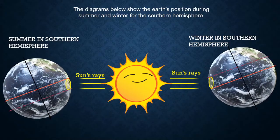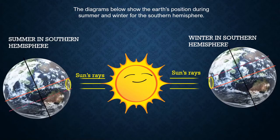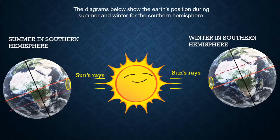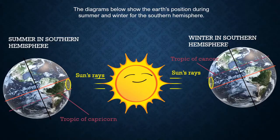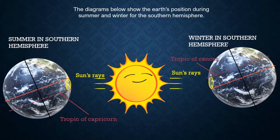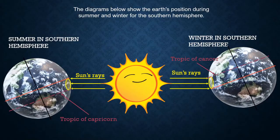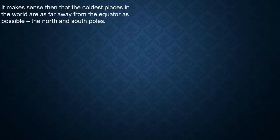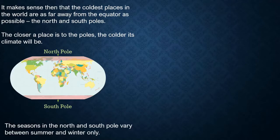These two diagrams represent the position of the earth according to the seasons of the southern hemisphere. The southern hemisphere is tilted towards the sun during its summer season, causing the insolation to strike directly between the equator and the Tropic of Capricorn. During winter for the southern hemisphere, the southern hemisphere is tilted away from the sun and insolation strikes most directly between the equator and the Tropic of Cancer in the northern hemisphere. If the equatorial regions are the hottest, it makes sense that the coldest places in the world are as far away from the equator as possible — the north and south poles.